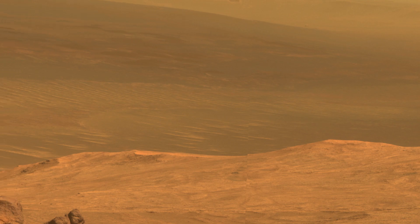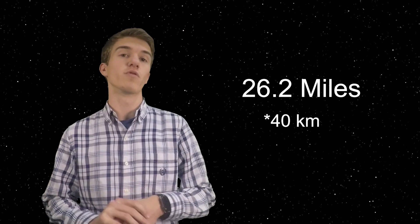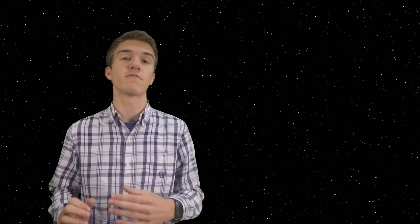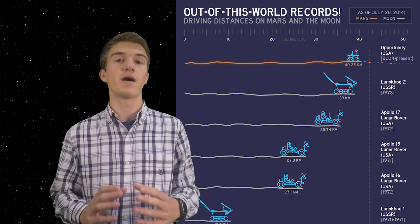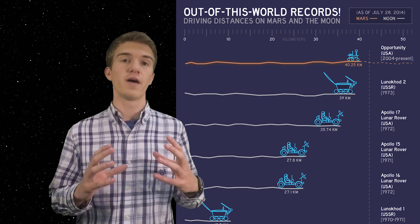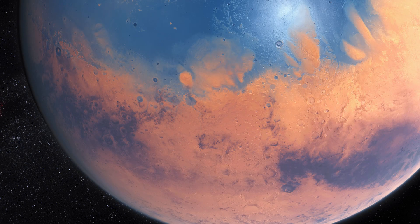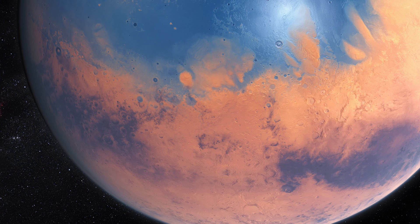The Opportunity rover is still working on the surface of Mars today. As of 2015, it had actually traveled 26.2 miles, which is pretty phenomenal and actually the furthest distance that a man-made object has ever traveled on the surface of another planet or on the surface of another moon. Opportunity is currently trying to study more about the past life, whether or not Mars could have held life, and if Mars once had water on its surface.